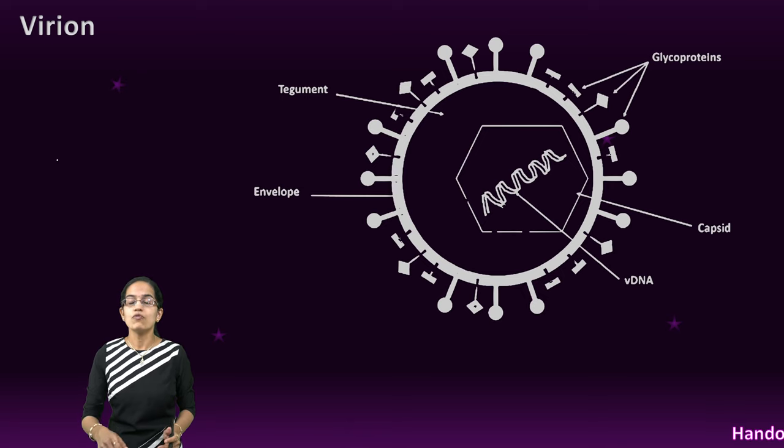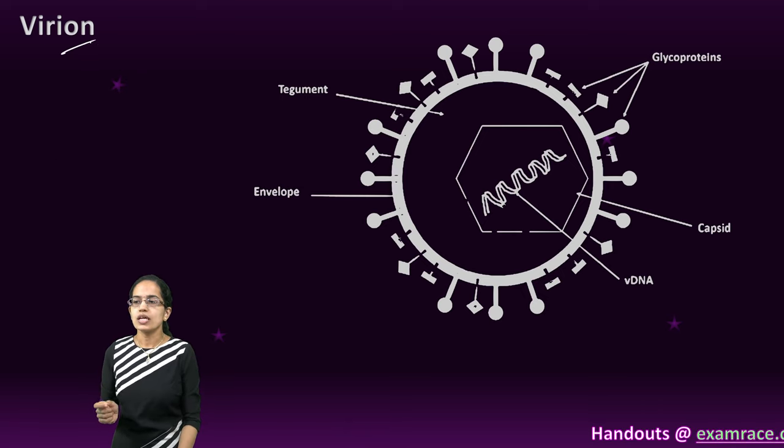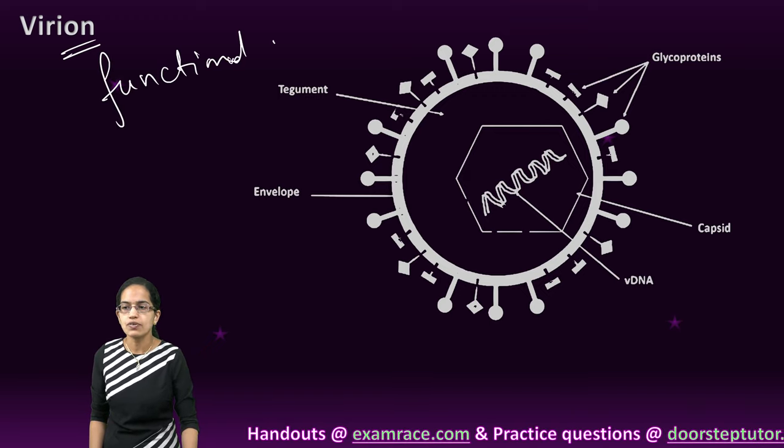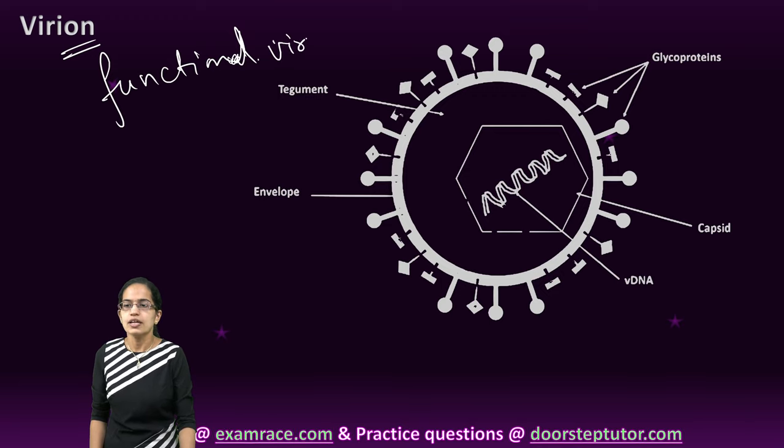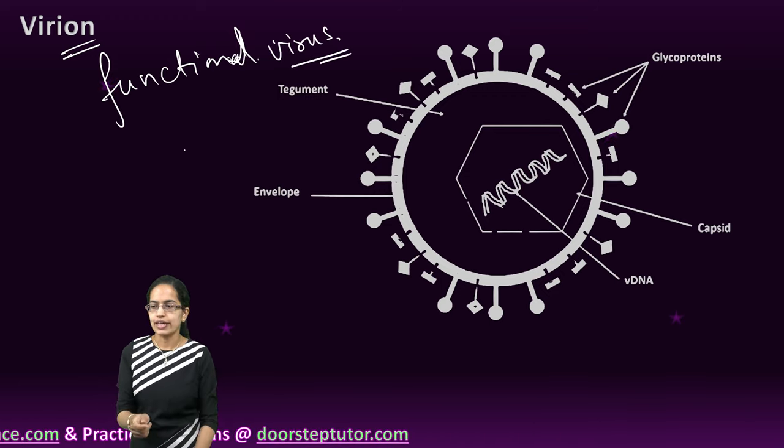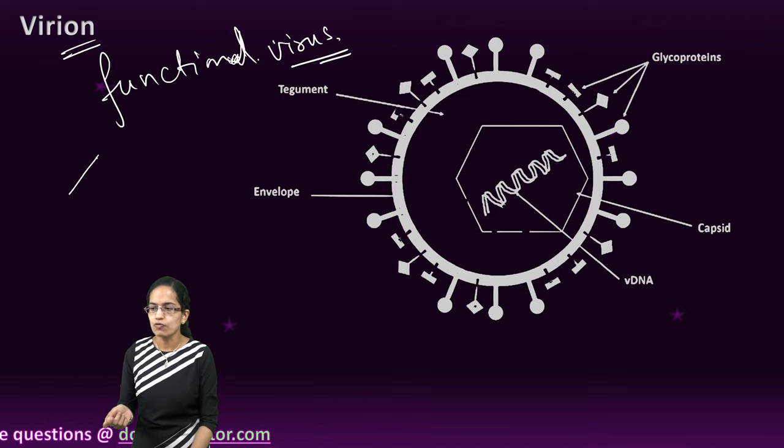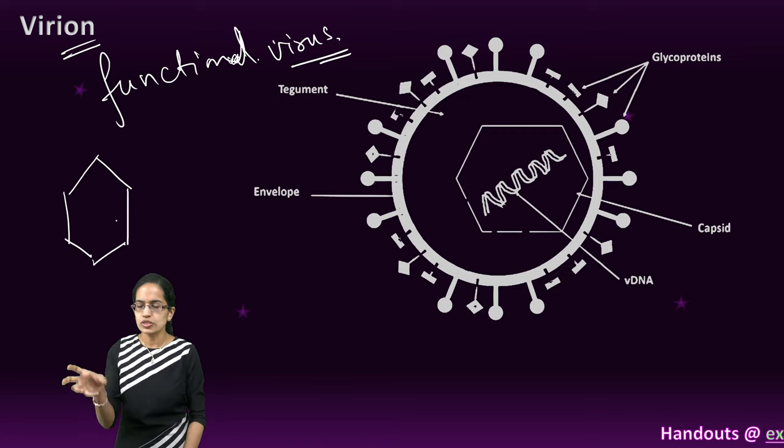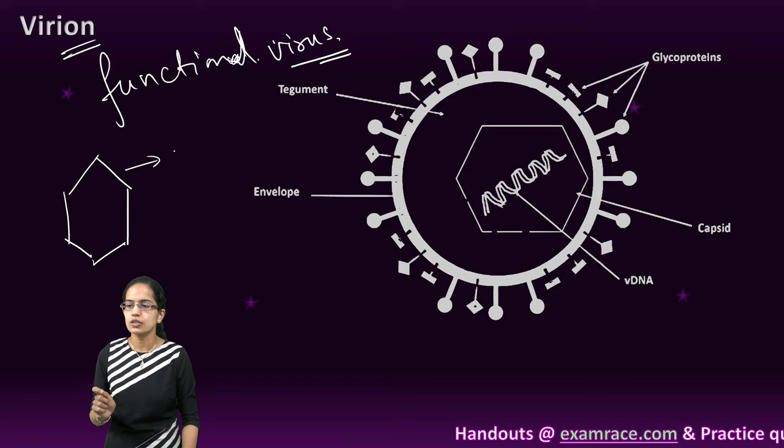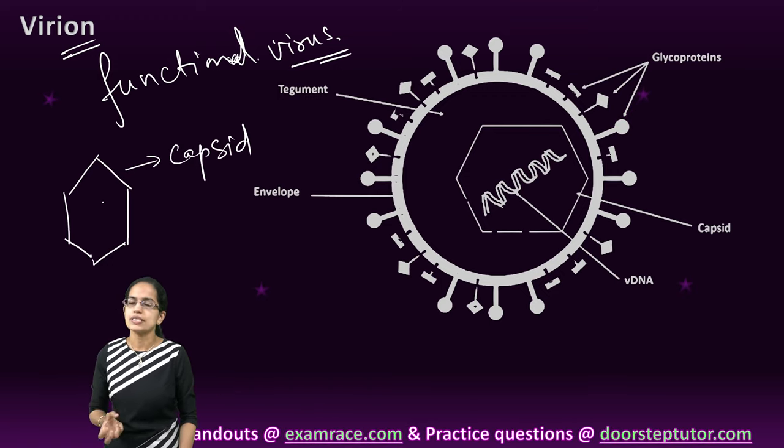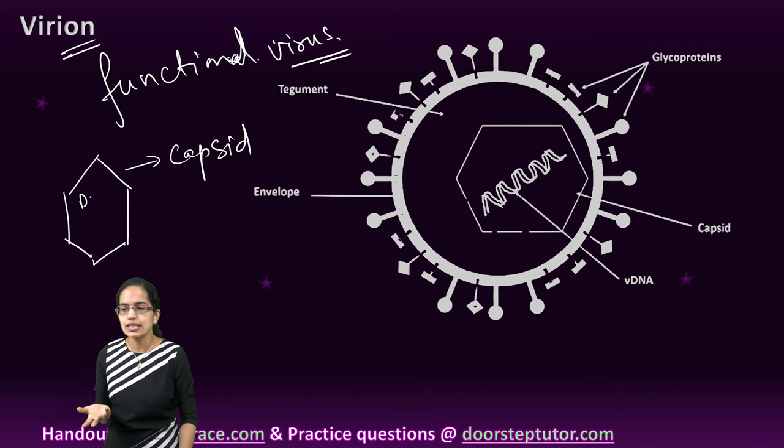Moving on to virions, virions are unique because they are functional viruses which have the capability to infect. They have the same structure as the virus. In the last section, we forgot to understand what actually is the structure of a virus, so let's do it here. When we talk about the structure of virus, they have an outer protein coat known as capsid, and inside the capsid there is genetic material.